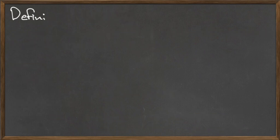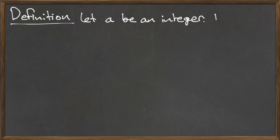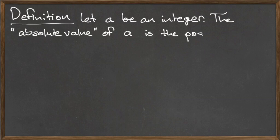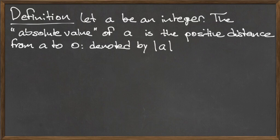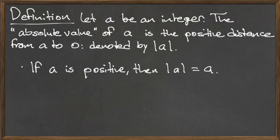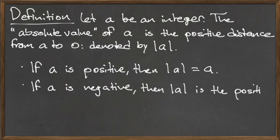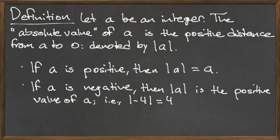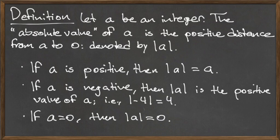As mentioned previously, we can use algorithms to represent various mathematical ideas. One such idea is the notion of absolute value, which is the positive distance from any integer a to zero, denoted by a surrounded by two vertical bars. We define the absolute value of a as follows: if a is positive, then the absolute value of a is a itself. If a is negative, then the absolute value of a is the positive value of that integer a. And finally, if a is equal to zero, then the absolute value of a is zero.